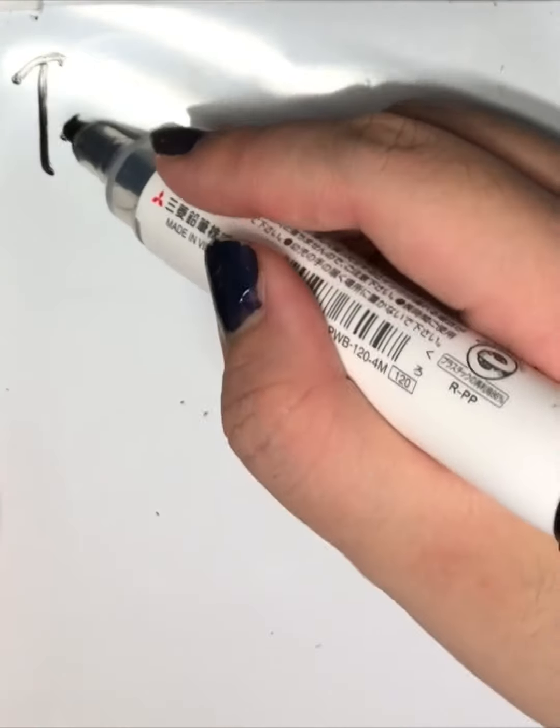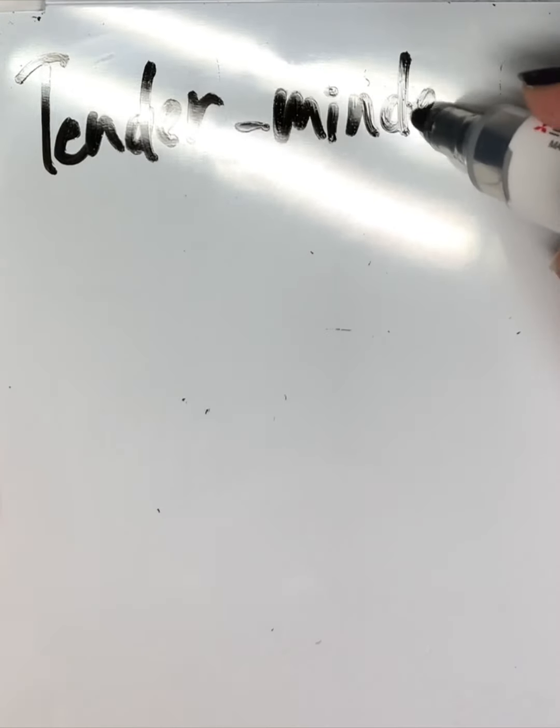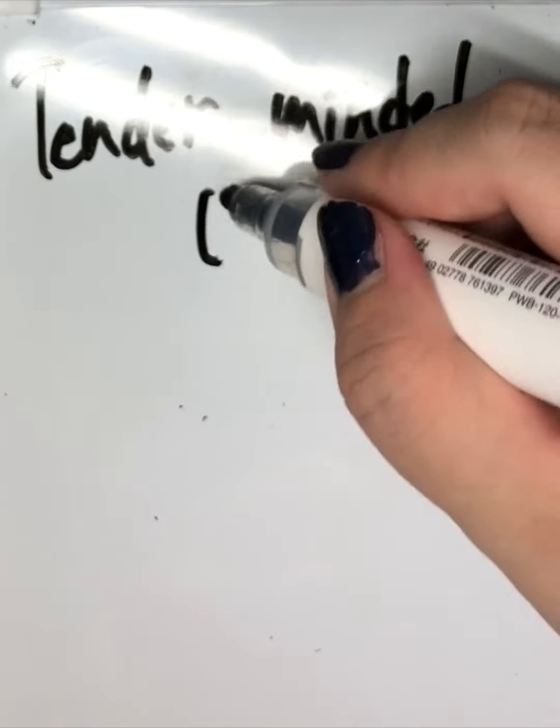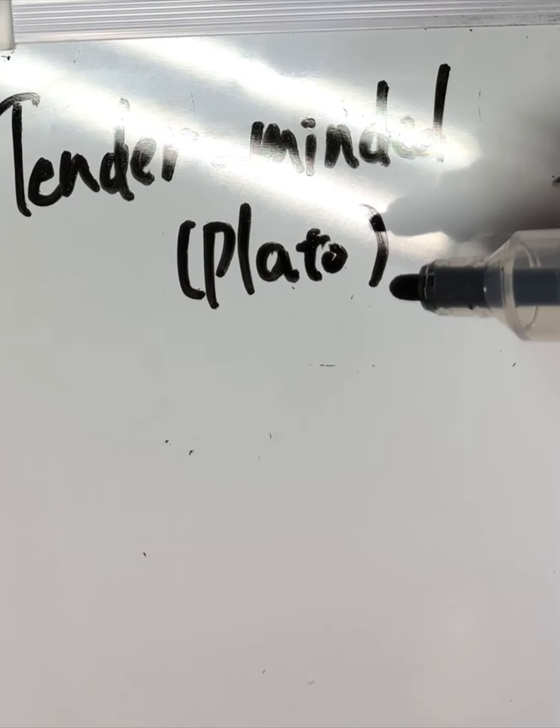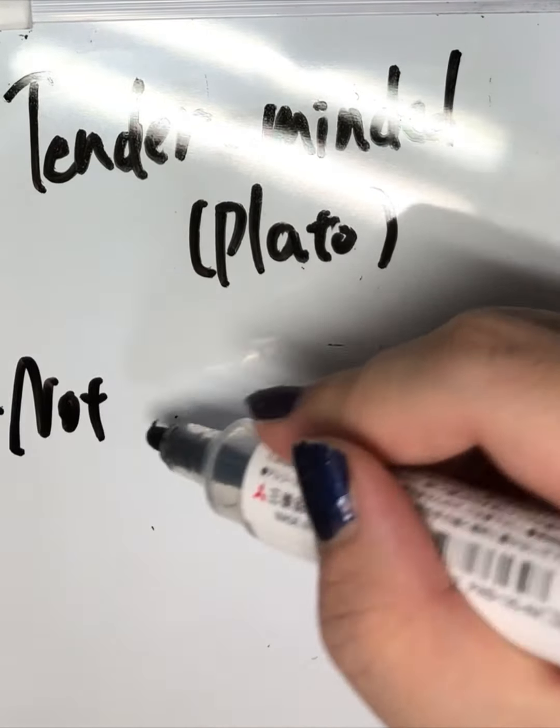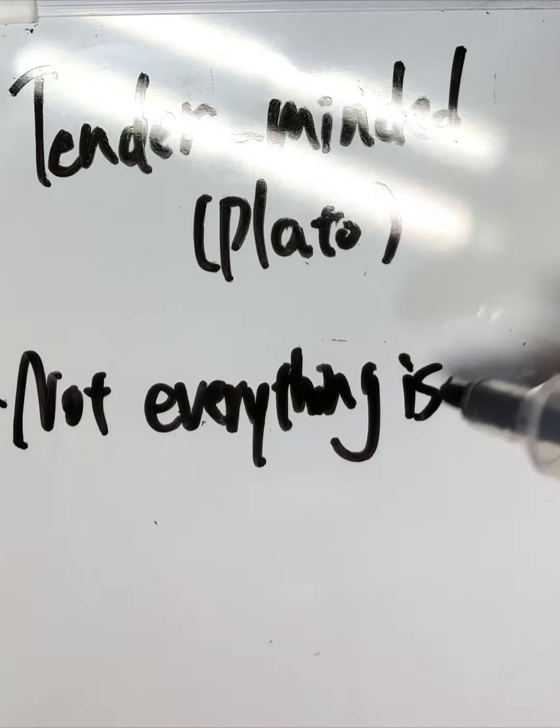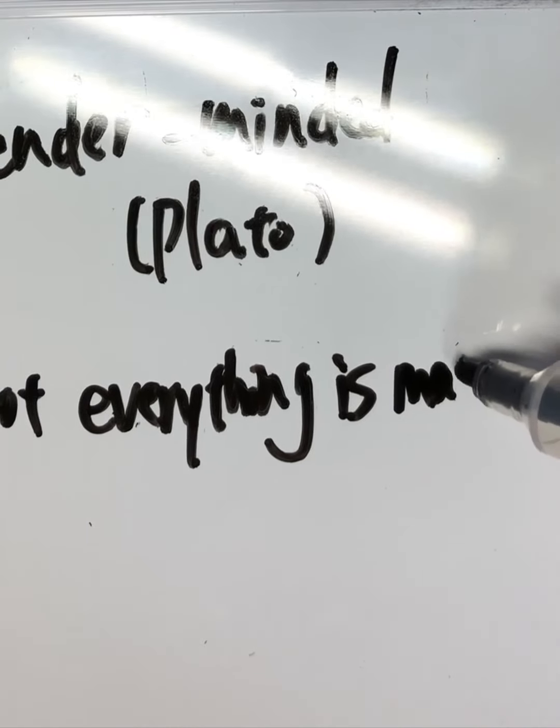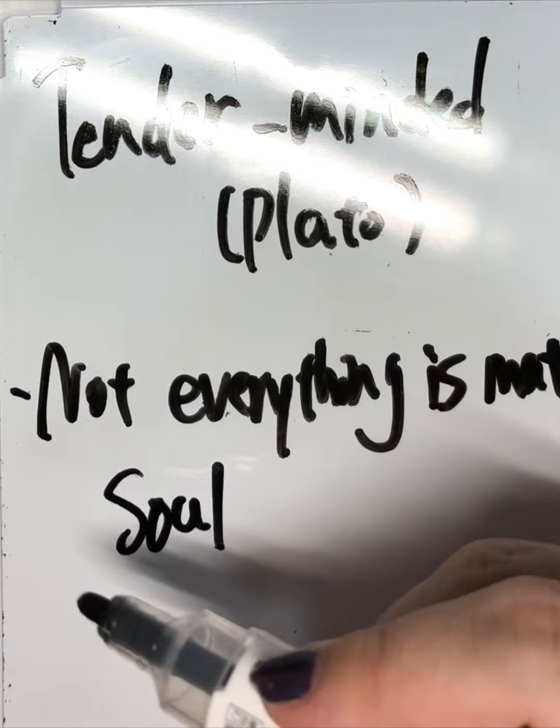Tender-minded. The original tender-minded philosopher is Plato. Not everything is material. Soul is immaterial.